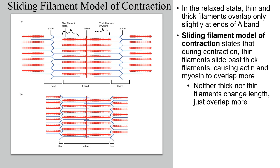We are not changing the length of any of the actin or myosin — we're just changing how much they're overlapping each other. If you measured the length of the actin and myosin in the relaxed versus contracted picture, they would be identical. It's just the overlap that's actually changing. When we have a nerve impulse causing muscle contraction, the myosin heads bind to the actin binding sites and form the cross bridge — and that's when contraction starts.